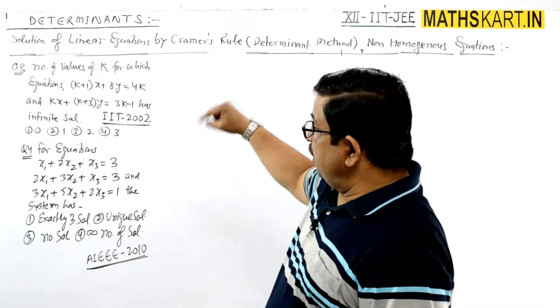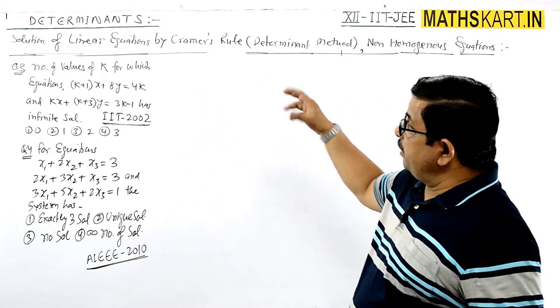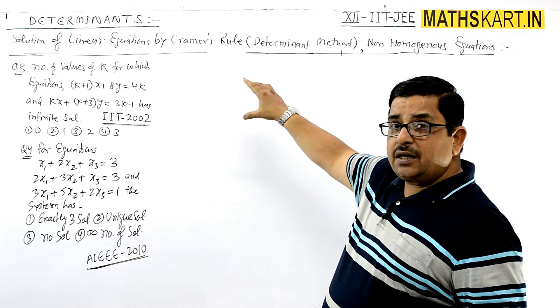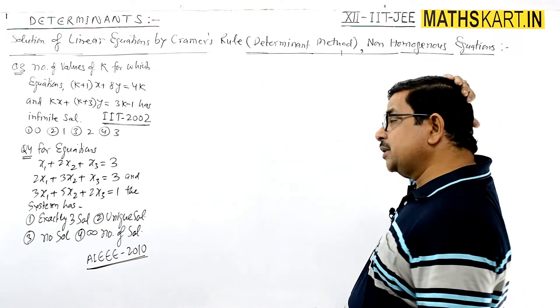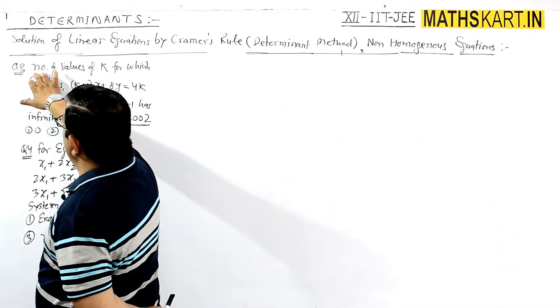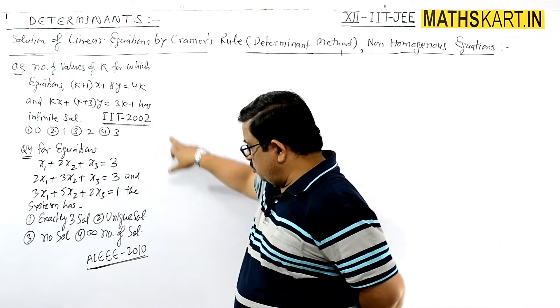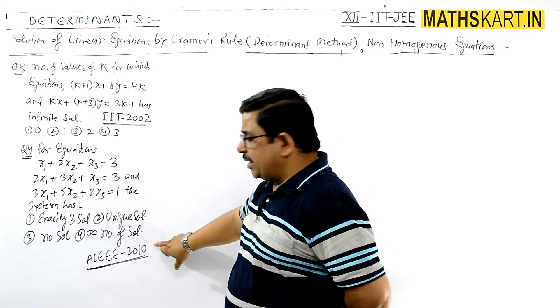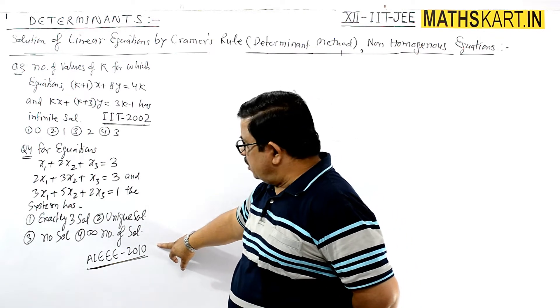Next, questions three and four are based on the same linear equations using Cramer's rule or determinant method. Question number three is from IIT JEE 2002, and question number four is from AIEEE 2010.